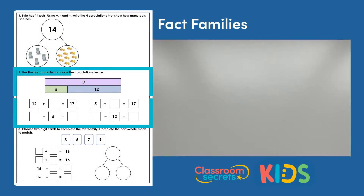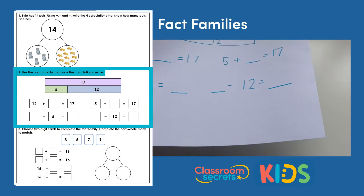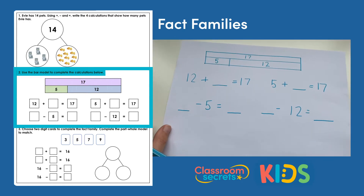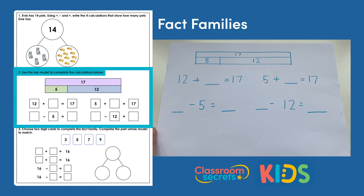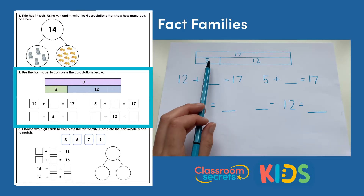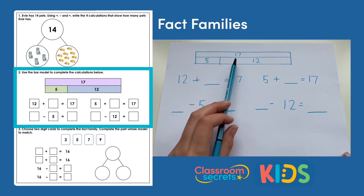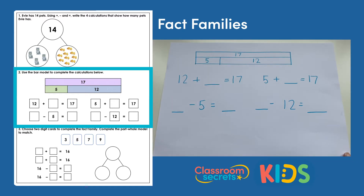Question 2: use the bar model to complete the calculations below. Here we have a bar model at the top and it's exactly the same principle as the part-whole model. Let's fill in the blanks — we know that part plus part equals whole, and our whole number is 17.